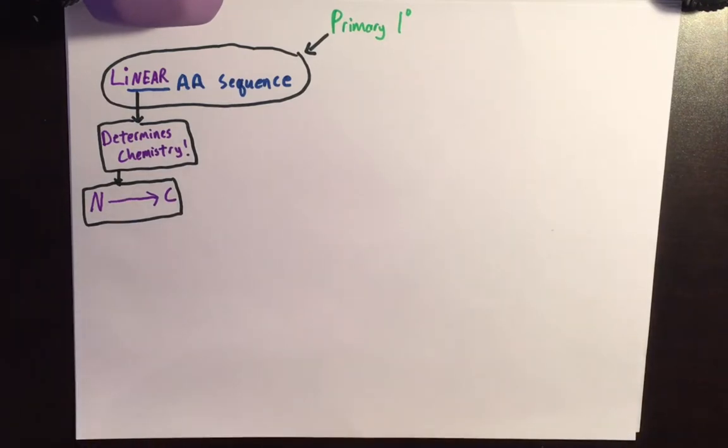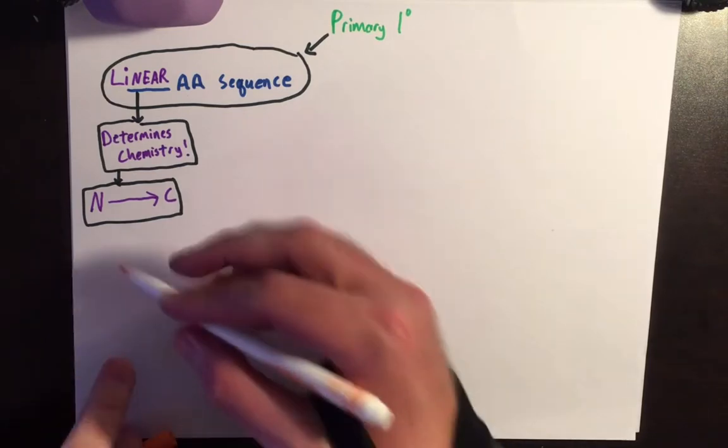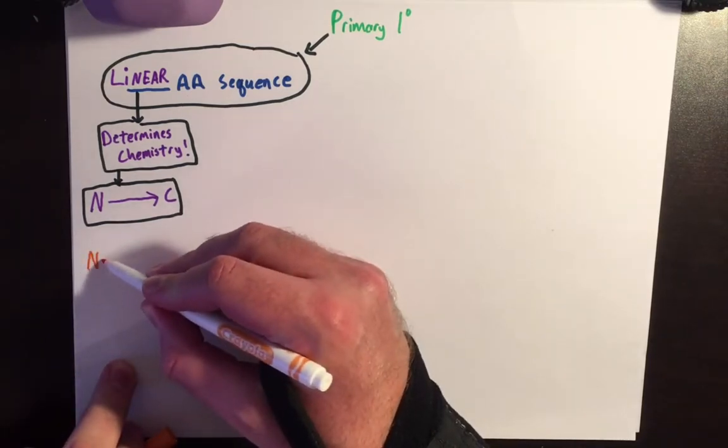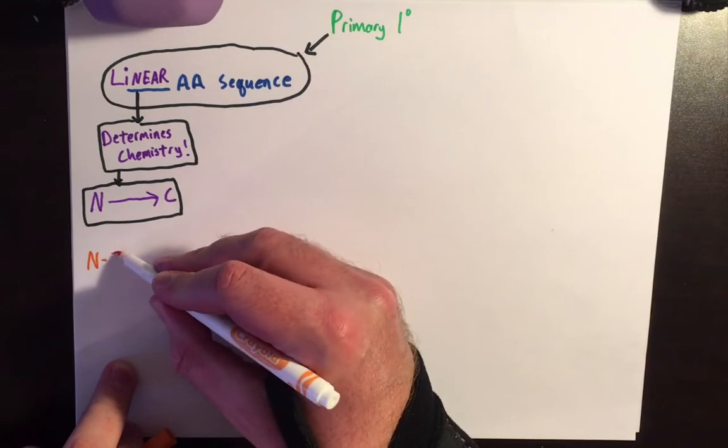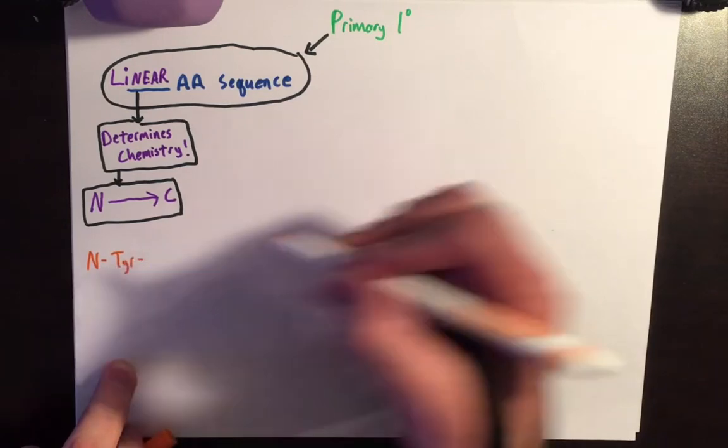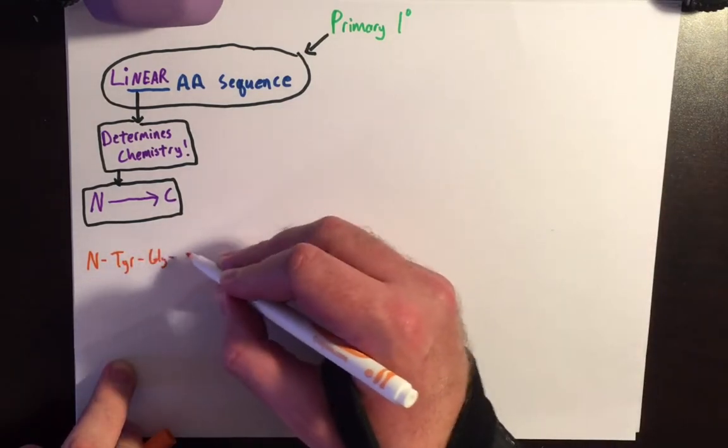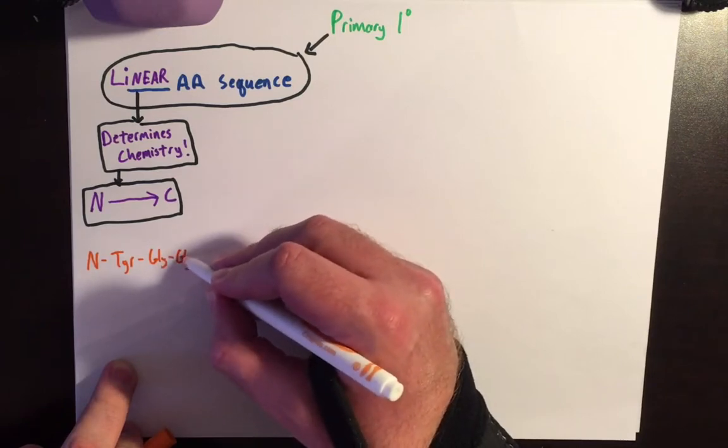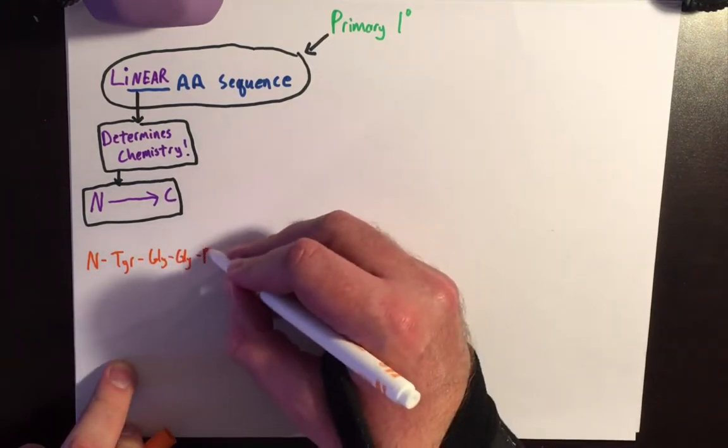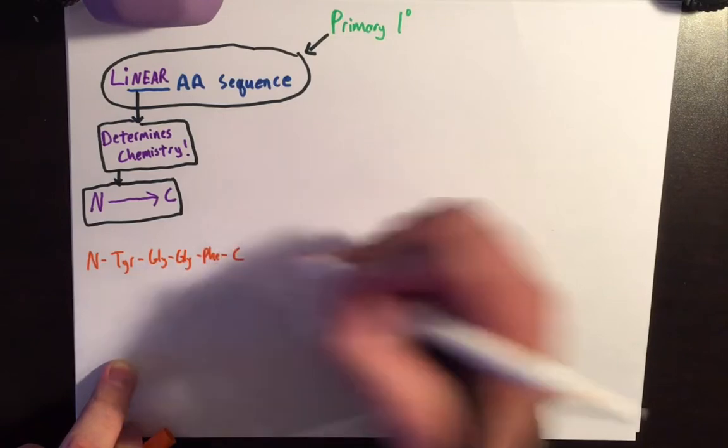When I say that the linear amino acid sequence determines the chemistry, I mean that if you were to have a protein, let's say that this is the N-terminus here, and its amino acid sequence was tyrosine, followed by maybe a glycine, maybe another glycine, and then maybe phenylalanine, and then there's the C-terminus.